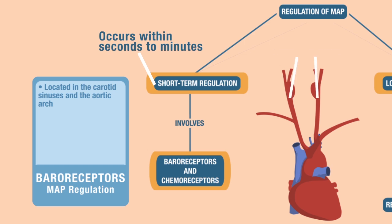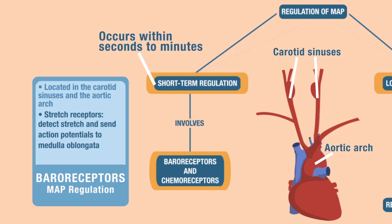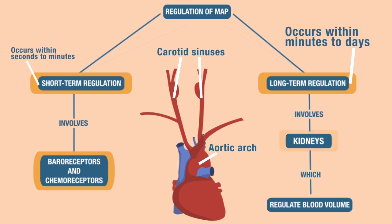Baroreceptors are located in the carotid sinuses as well as the aortic arch. These baroreceptors are stretch receptors — they are able to detect stretch and then send action potentials to the cardiovascular control center in the medulla. What causes them to stretch? Pressure. If we change the pressure in the vessels, that can either increase or decrease the amount of stretch. In long-term regulation, it involves the kidneys. The kidneys regulate your blood volume, and by regulating blood volume, we can regulate your mean arterial pressure.